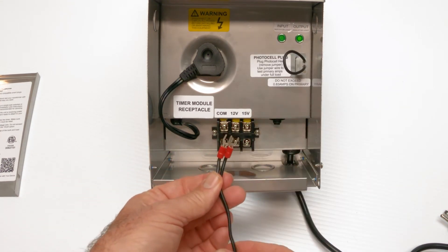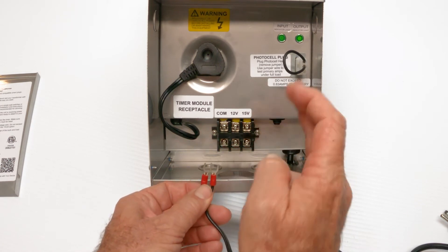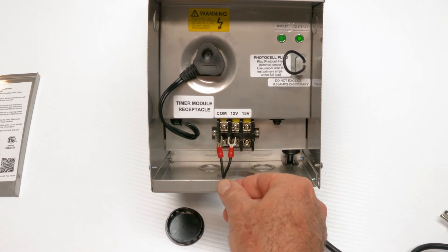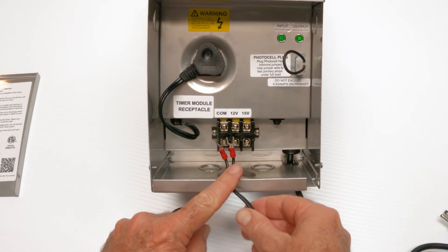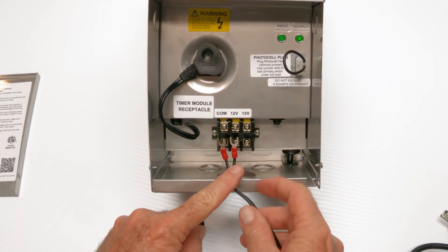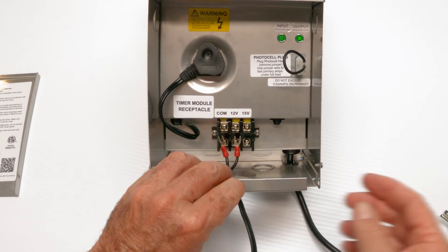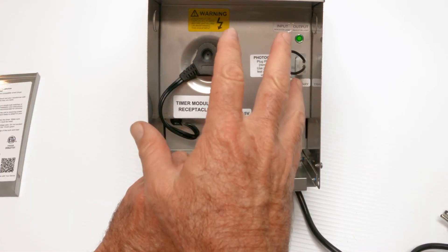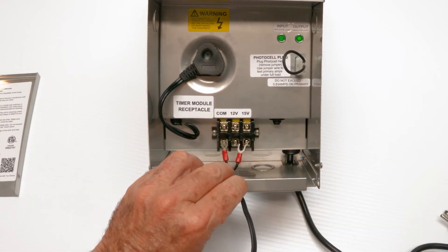So they're connected here. And this is important. We get asked all the time. You can put more than one set. So you can run this out, say to the front yard and run another one out to the side yard and another one out to the backyard. And as long as you don't exceed 100 watts, everything's going to be fine.